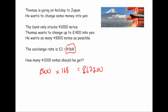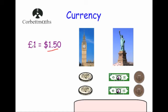Now the bank only has 1,000-yen notes, so Thomas couldn't actually get 67,200 yen. The maximum he could get is 67,000 yen — that's 67 notes of 1,000 yen each. So he would get 67 notes, giving him 67,000 yen.